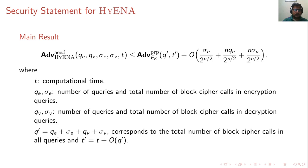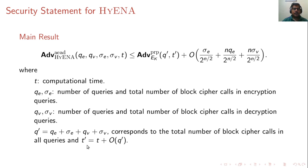In terms of security, we show that the AEAD advantage of HYENA is bounded by sigma_E / 2^(n/2) + n*Q_E + Q_V / 2^(n/2). This construction is birthday-bound secure, plus there is a PRP advantage term for the block cipher E_K. Here Q_V and sigma_E are the number of queries and total block cipher calls for encryption queries; Q_V and sigma_V represent the same for decryption queries. T and T' are the usual time parameters.